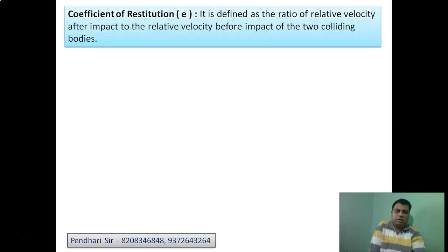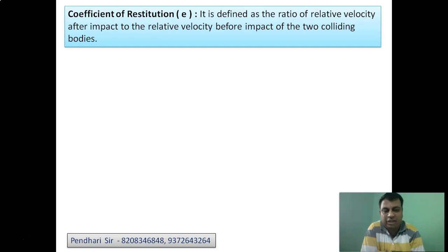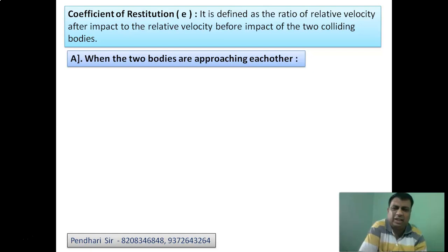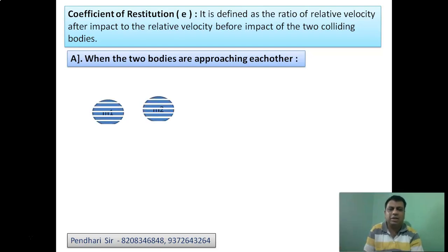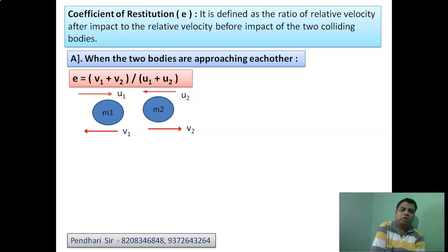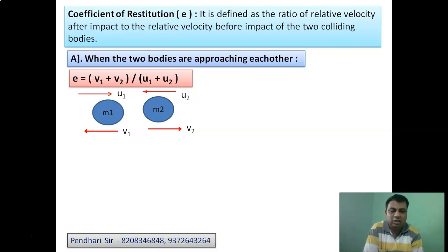Moving further, the coefficient of restitution is defined as the ratio of relative velocity after impact to the relative velocity before impact of two colliding bodies. The velocity after impact is in the numerator and the velocity before impact is in the denominator. For exam purposes: if two bodies M1 and M2 approach each other with velocities U1 and U2, and after impact their velocities are V1 and V2, the coefficient of restitution e = (V1 + V2) / (U1 + U2) when they are approaching each other — that is, addition of final velocities upon addition of initial velocities.